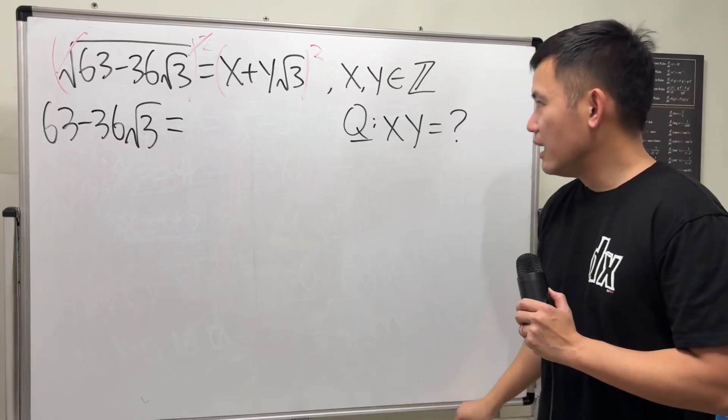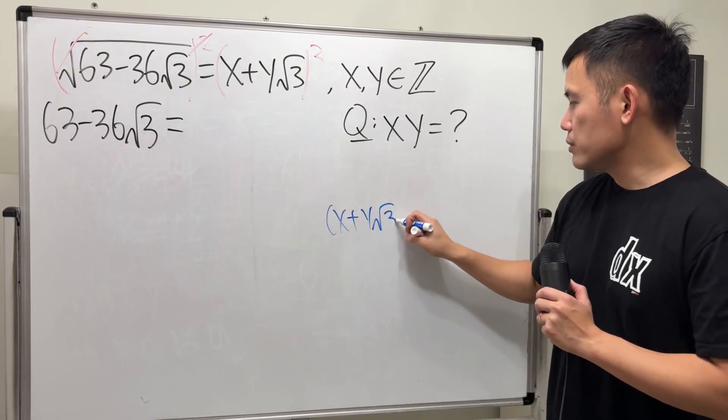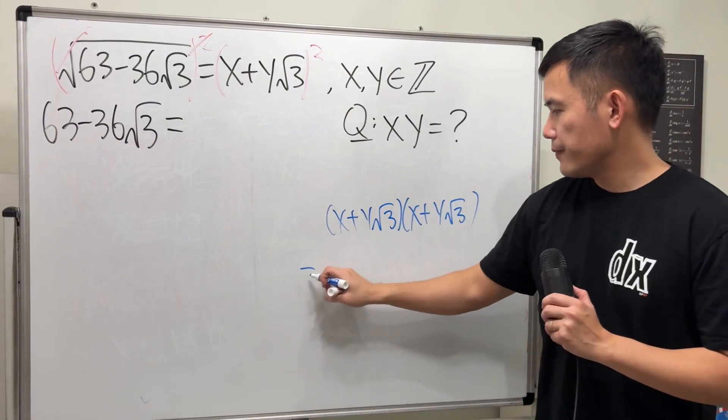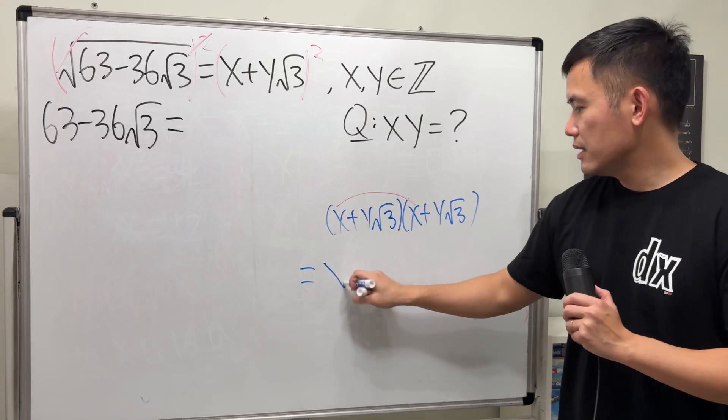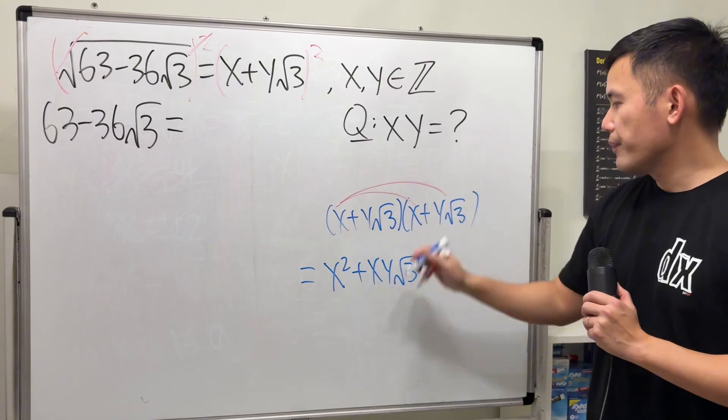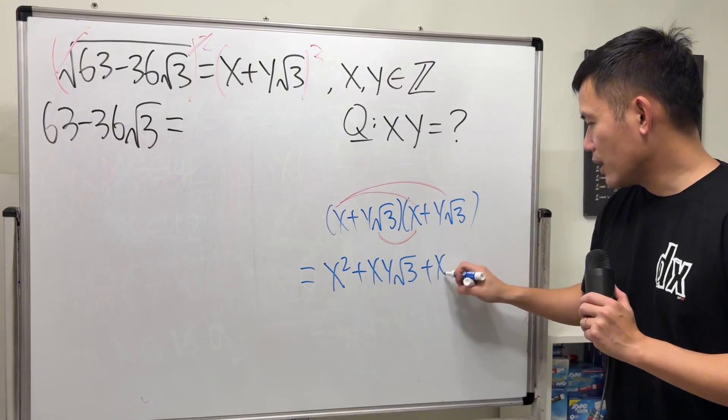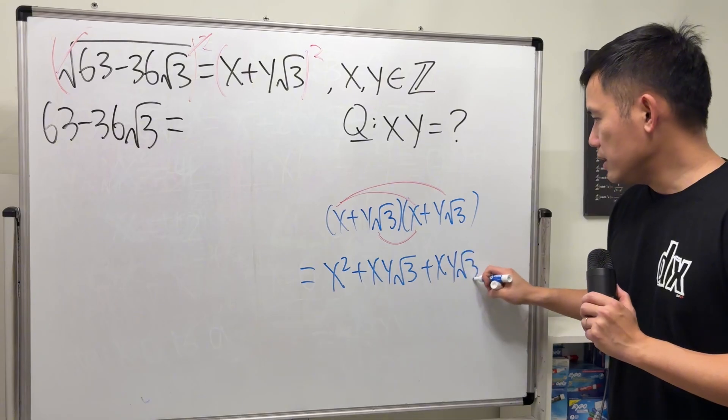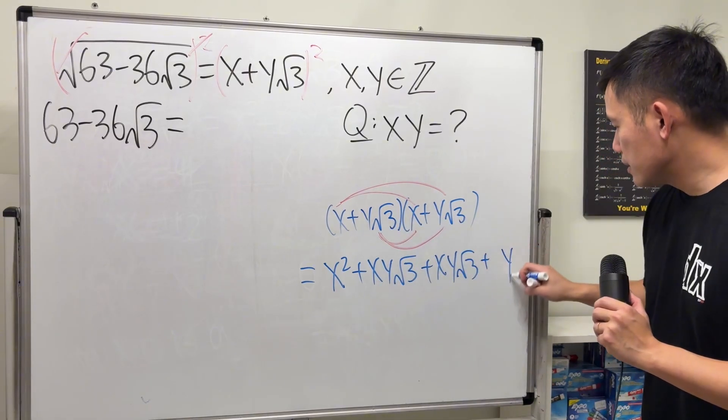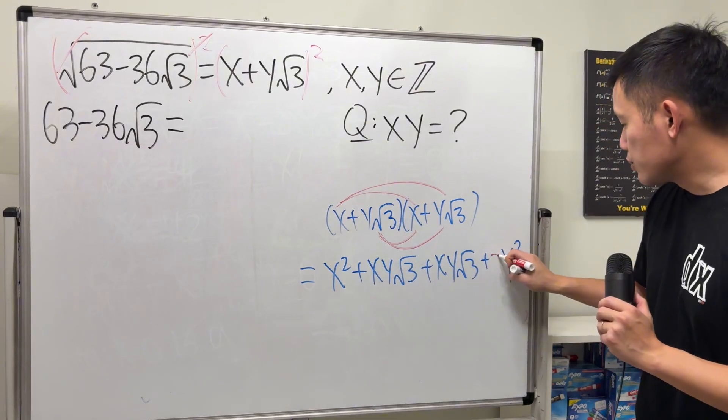And on the right hand side, let's just work that out. x plus y square root of 3 times x plus y square root of 3. So x times x, that's x squared. This times this is xy square root of 3. Do this again, let's put the x first, so xy square root of 3. Lastly, y times y is y squared, and square root of 3 times square root of 3 is just a regular 3. Let's put it here.